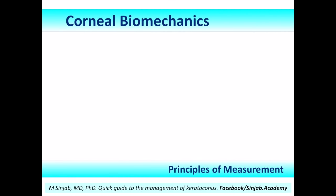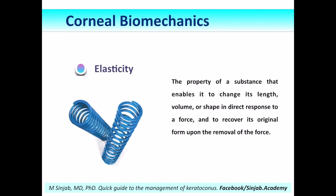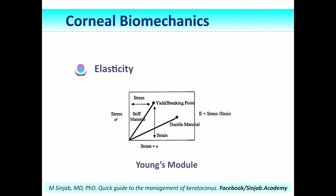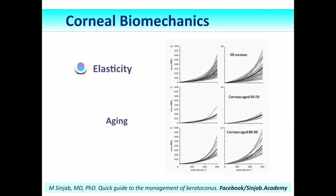Before discussing measurement tools of corneal biomechanics, we need to understand elasticity and viscosity. Elasticity is the property of a substance that enables it to change its length, volume, or shape in response to a force and to recover its original form upon removal of that force. Viscosity is the resistance of a fluid — liquid or gas — to a change in shape or movement of neighboring portions. Elasticity is measured by Young's modulus using a stress-strain diagram; the larger the number, the stiffer the cornea. With age, elasticity increases, meaning the cornea becomes stiffer.